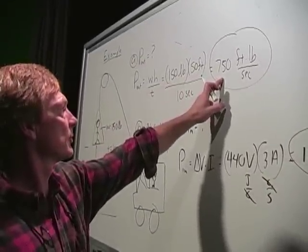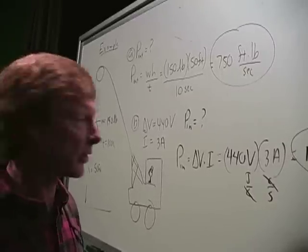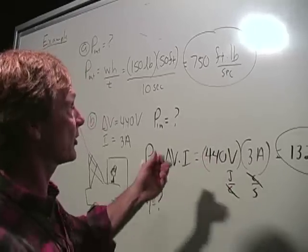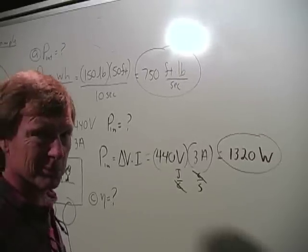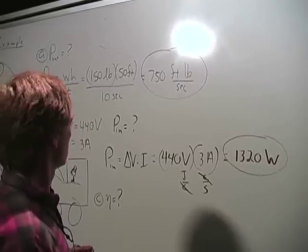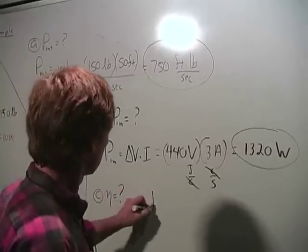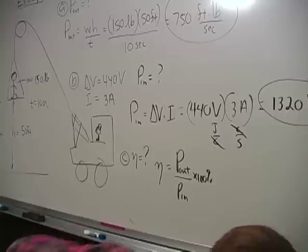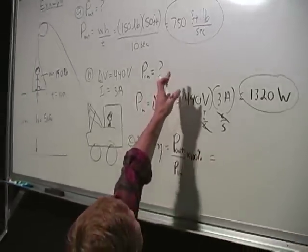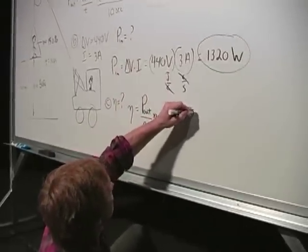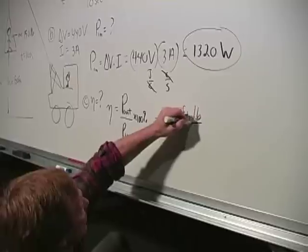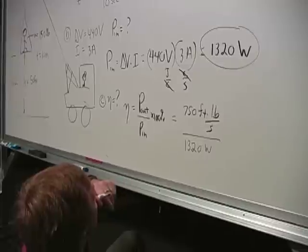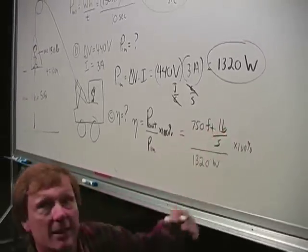And I should convert this to watts because I want to know what the percentage is. So let's see, what's the efficiency of this system? I put 1,320 watts in. I got 750 foot-pounds per second out. But I don't have them in the right units. So let's try it. Efficiency is the output power over the input power times 100%.